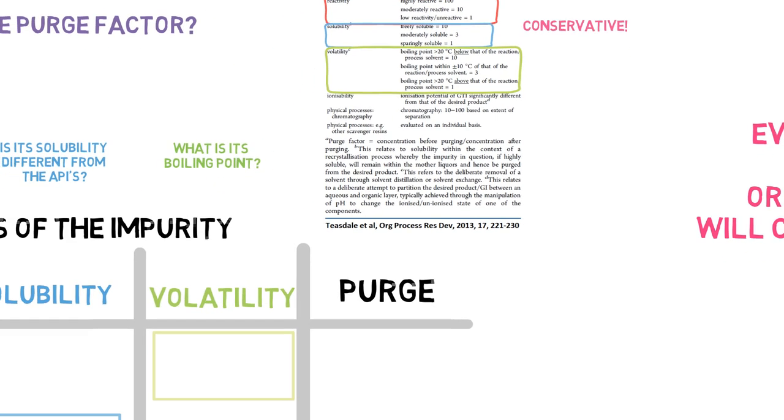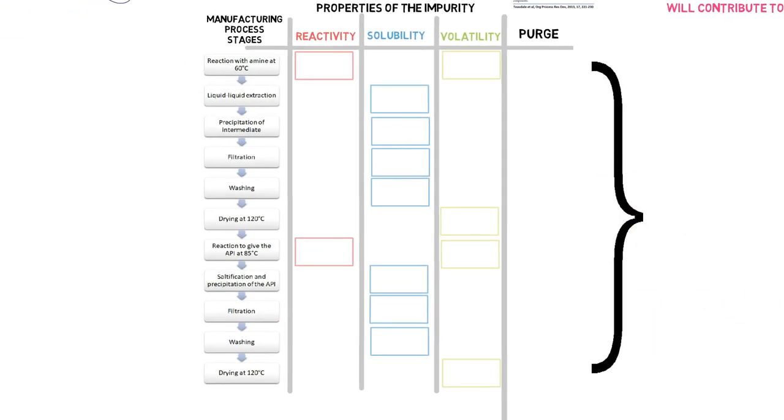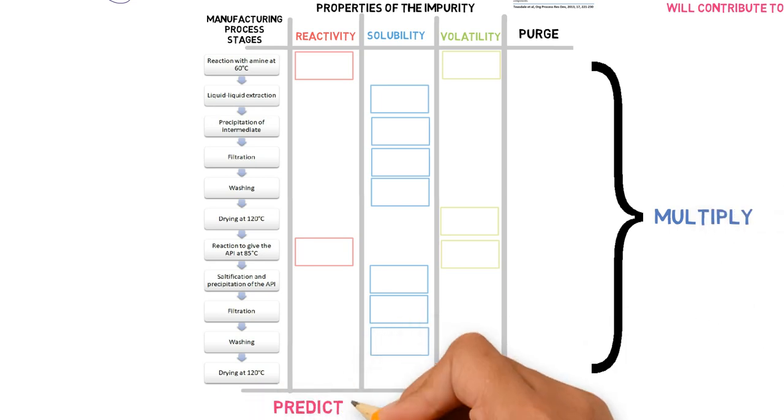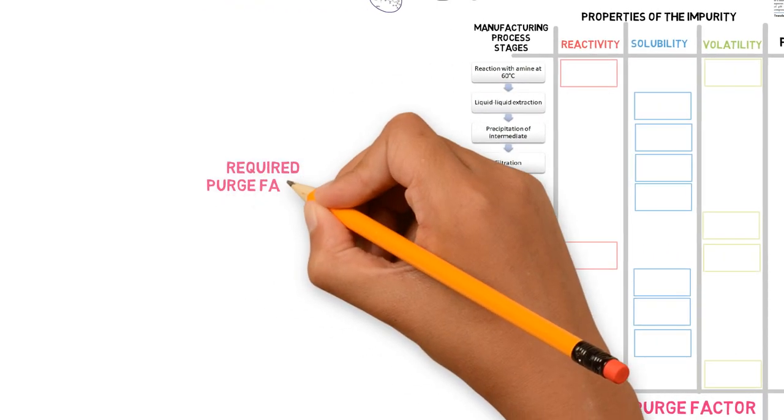If a stage cannot separate the impurity from the API, a purge of 1 is given. After we know the purge factor for each stage of the process, we simply multiply all factors to get the predicted purge factor. Then, we need to check if it is enough compared to the required purge factor.